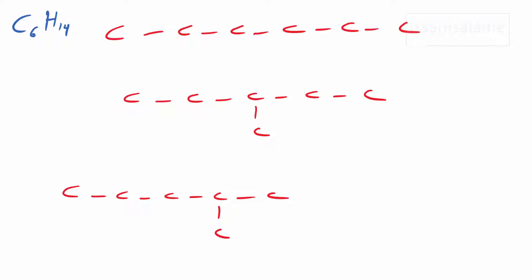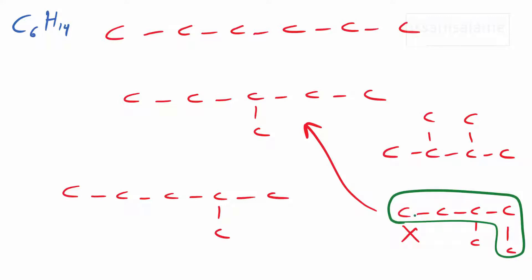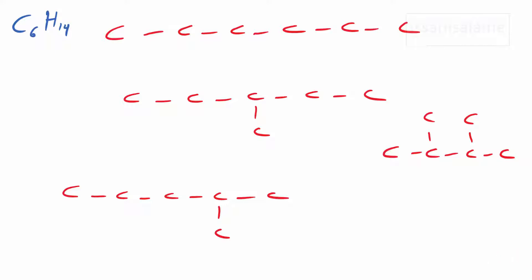Now I'll try putting four carbons in sequence and adding two methyl branches. I can add one to the second and one to the third carbon. What if I add one to the third and one to the fourth? That turns out to be the same as the previous one because the longest chain becomes five with one carbon in the middle — so I should erase it. The only other possibility is placing both branches on the same carbon.